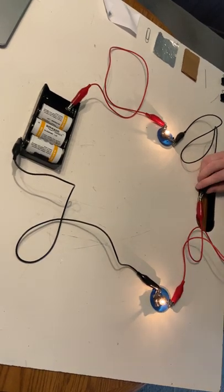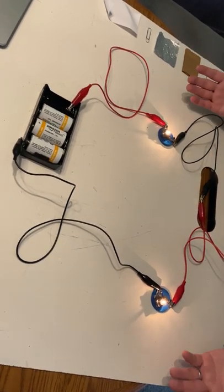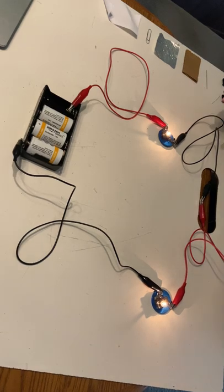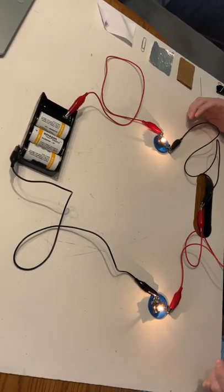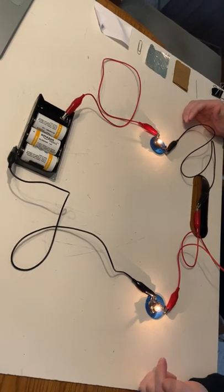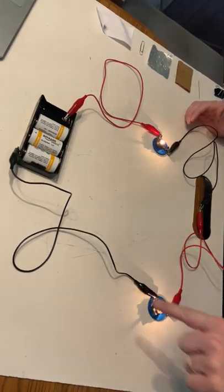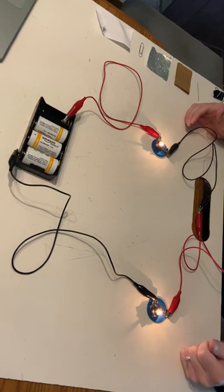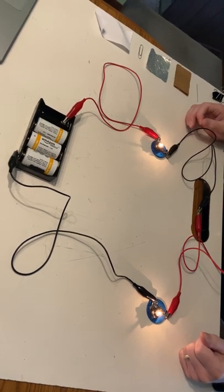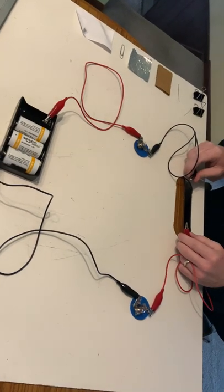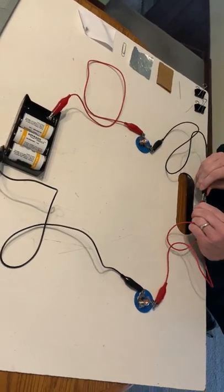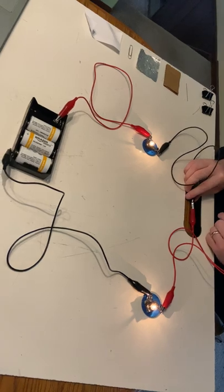I have here the same loop that I had before except I added in one extra wire. What we noticed in Activity 1 is that we needed to have a complete loop all the way around with no breaks in it. We call that a closed loop as opposed to an open loop. The bulbs are not lit. With a closed loop, then the bulbs are on.